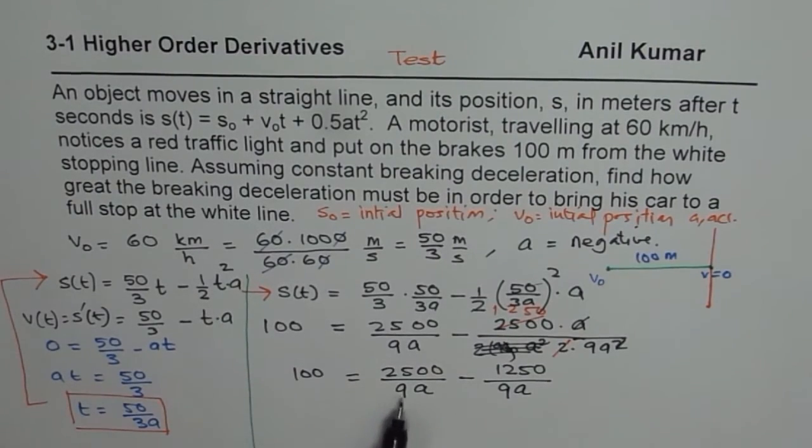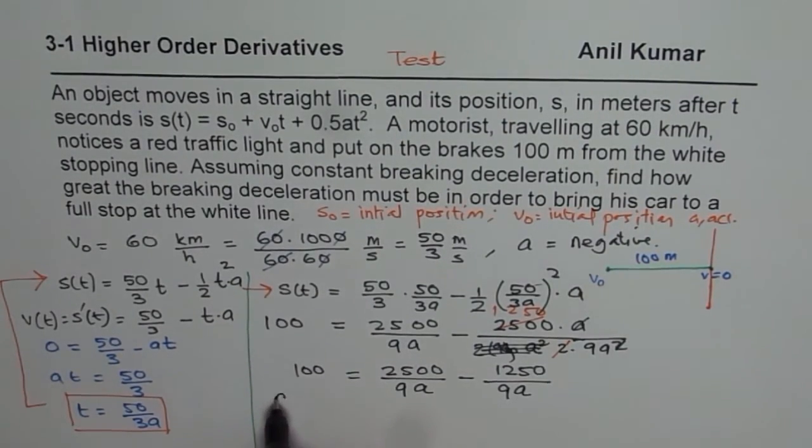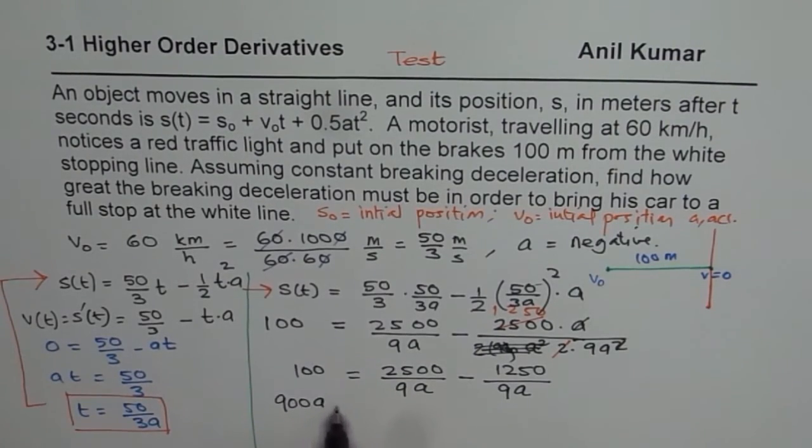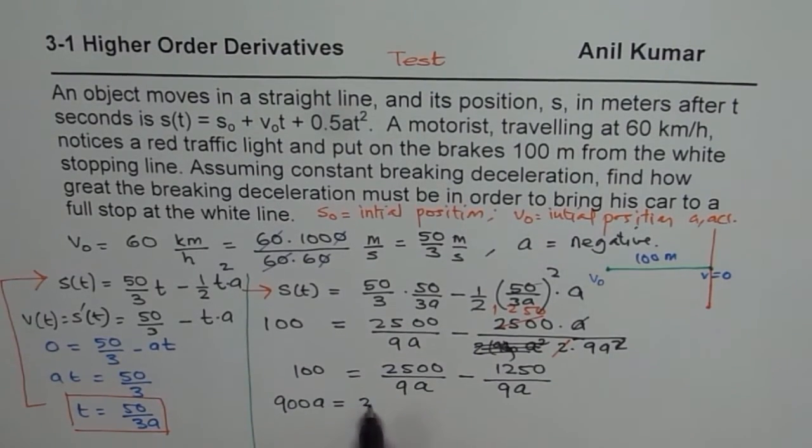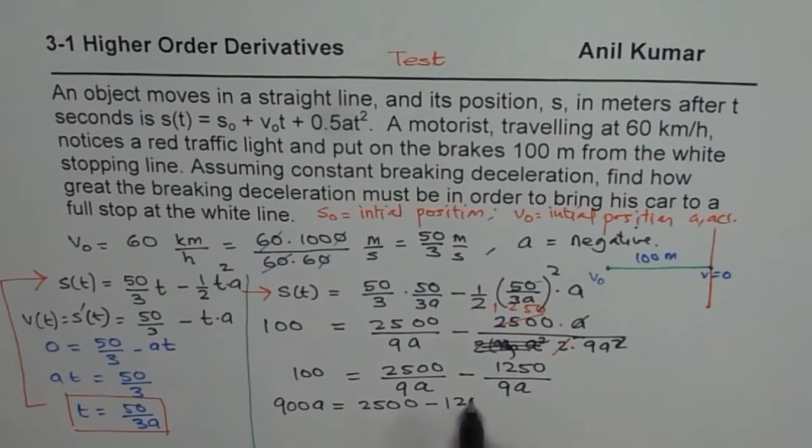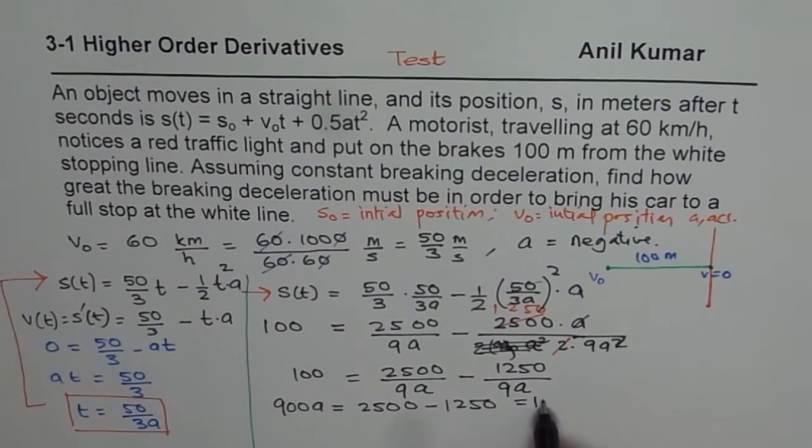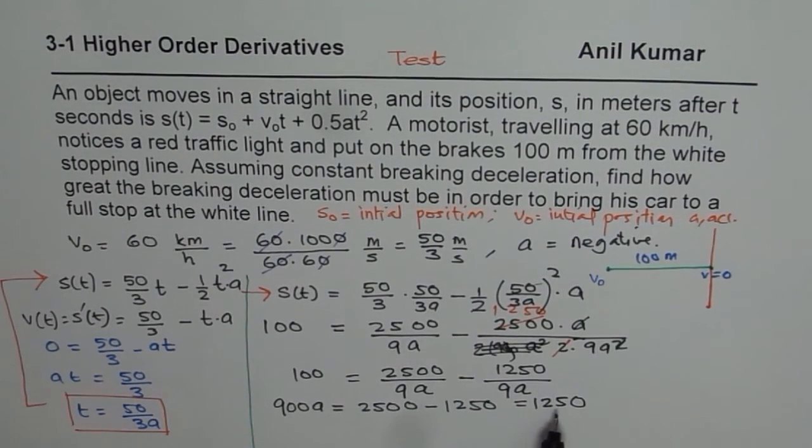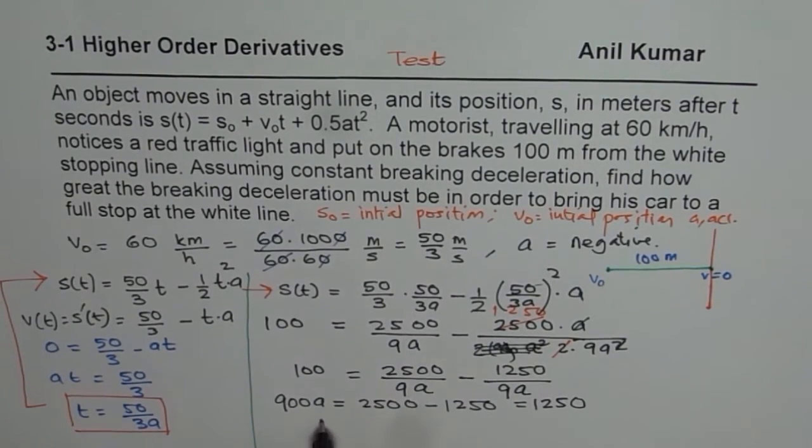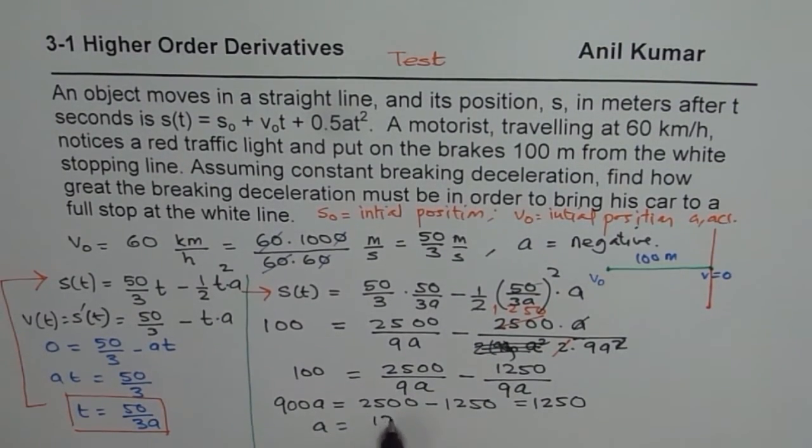Now we can multiply by 9a. So if I multiply by 9a, we get 900a equals 2,500 minus 1250. So 2,500 minus 1250 is 1250. So that is what we get here. Now, a equals 1250 divided by 900.